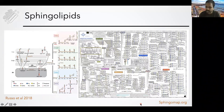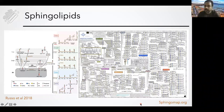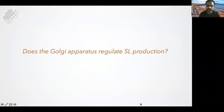The question we have asked here is what controls this specificity. We all know that the expression of these enzymes in each cell type is different, and so that plays a major part. But other than that, does the Golgi apparatus, where the enzymes are localized, also regulate sphingolipid production? This was the question that we asked.